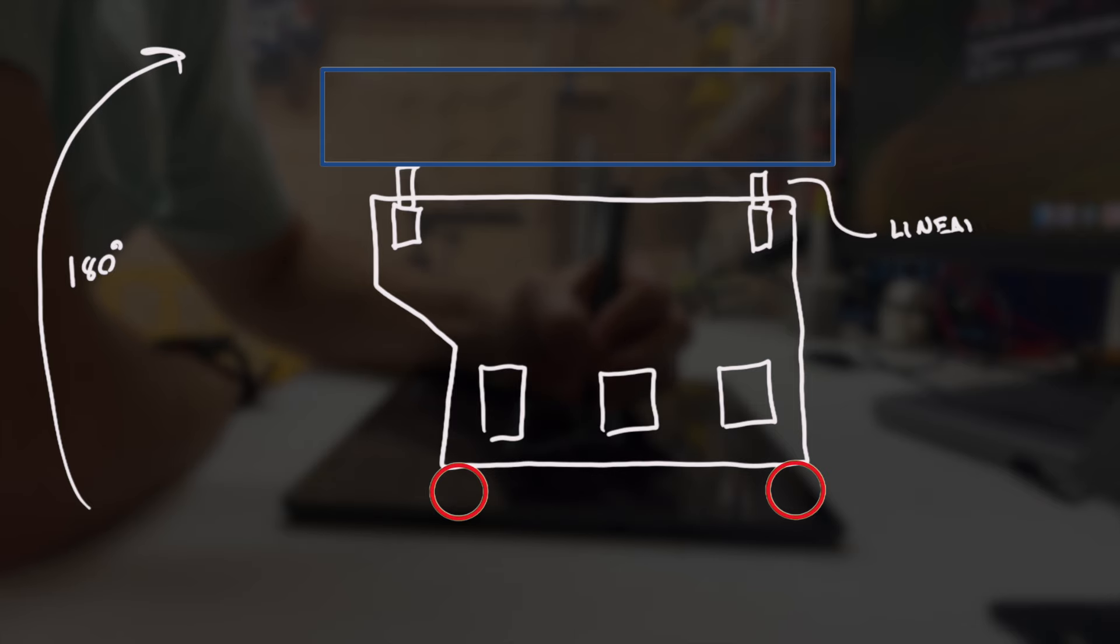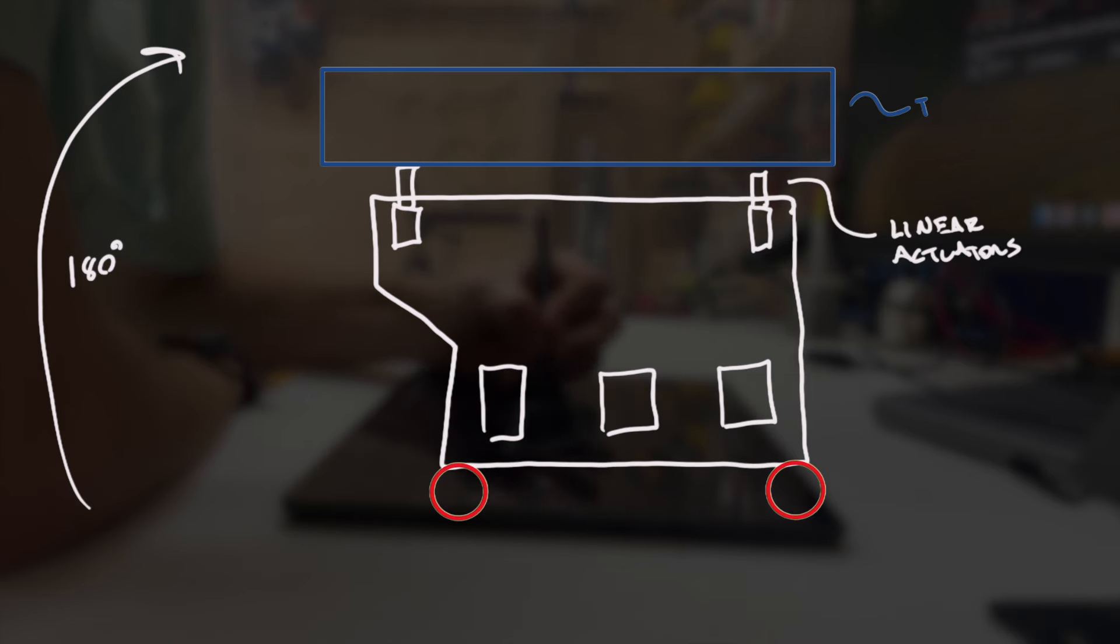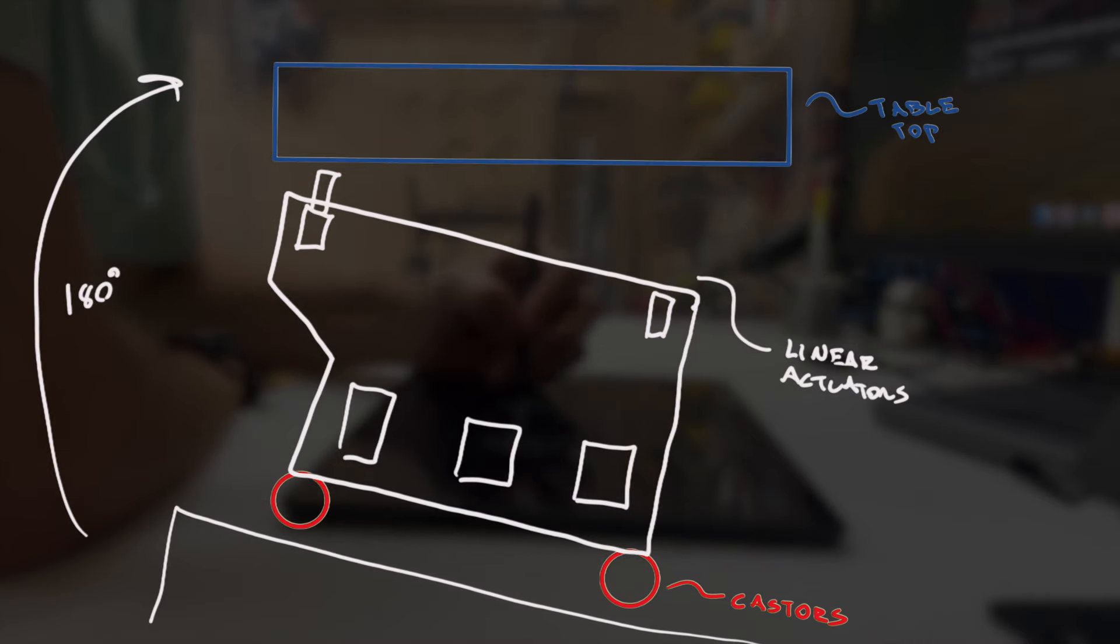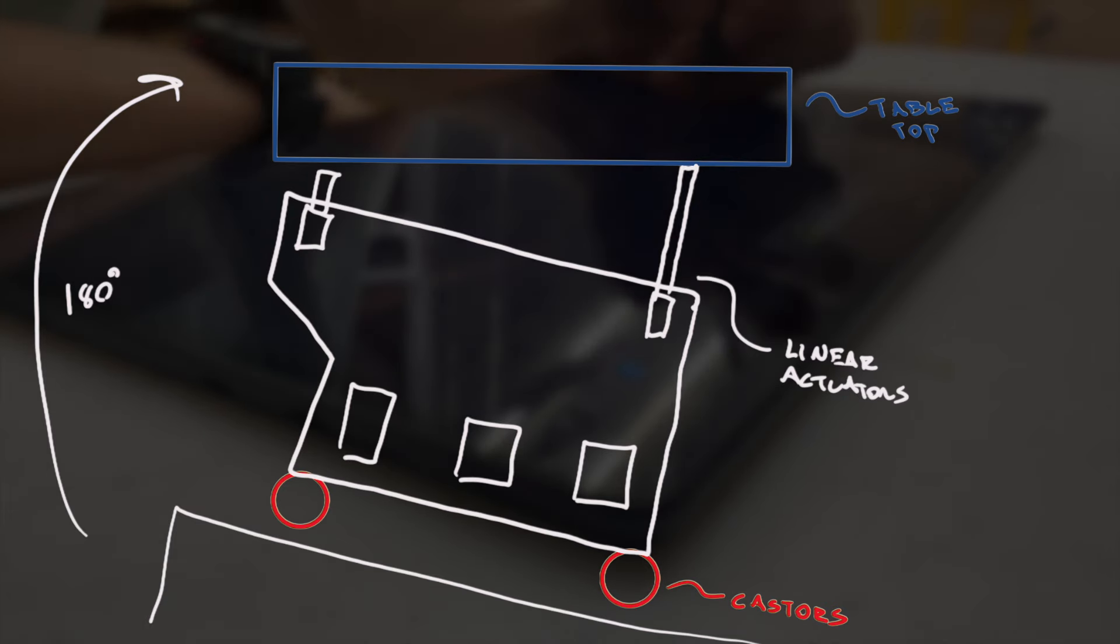The bus becomes a base, and the actuators now pointing upwards will attach to a tabletop. This setup allows me to attach casters on the base for mobility, while the actuators are able to extend or retract as necessary to keep the tabletop level.